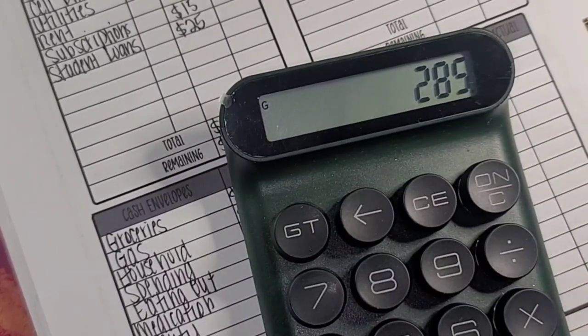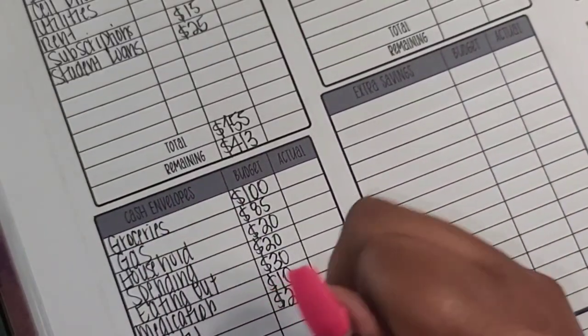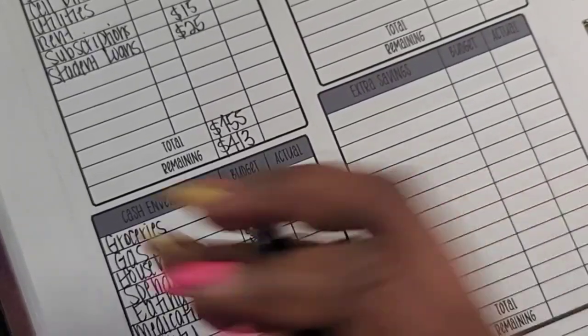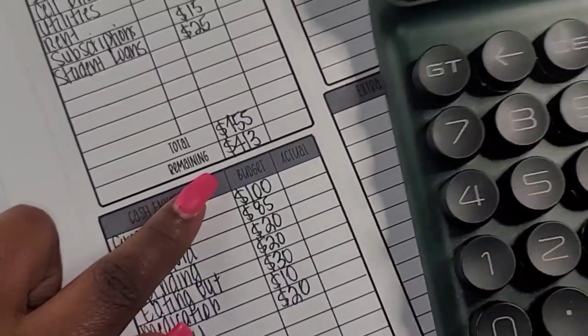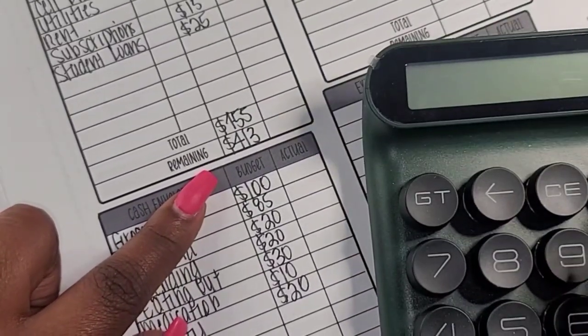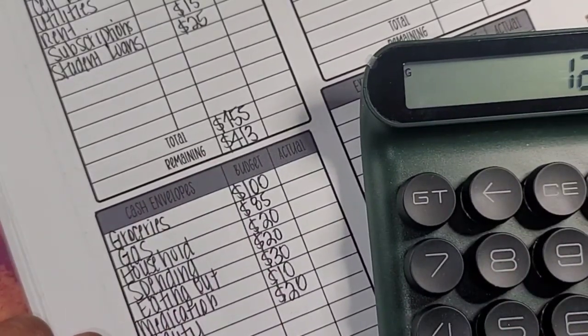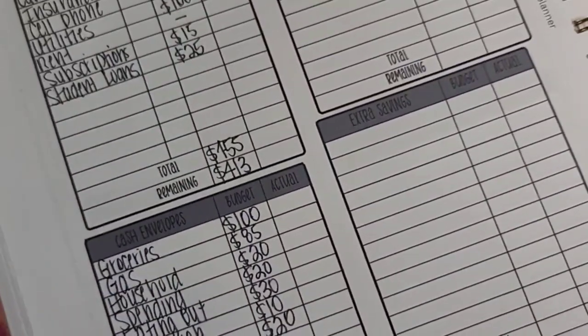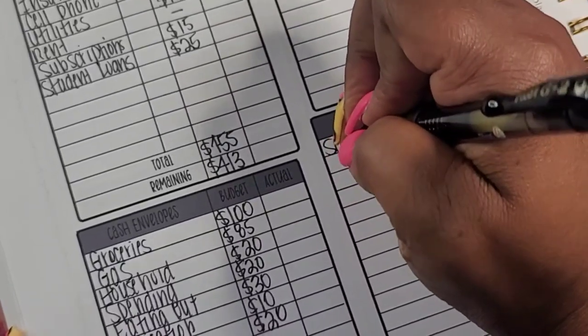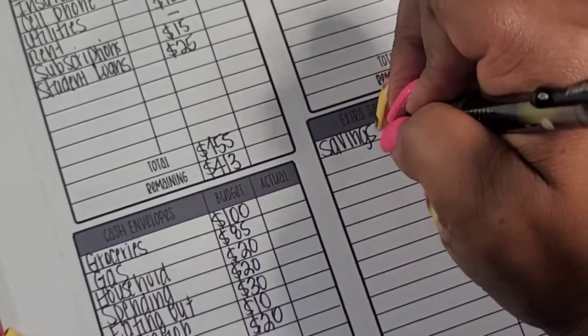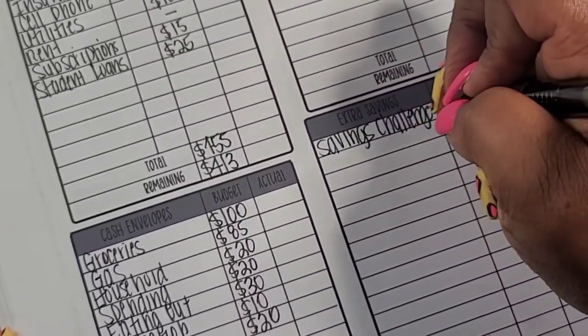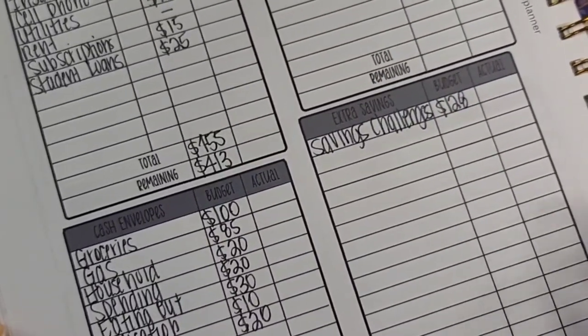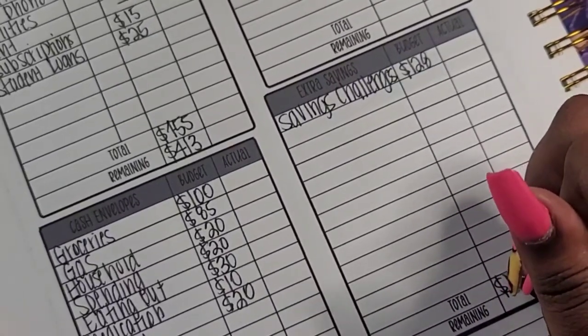So that gives me a total of $285. So now I will take this $413 and subtract it from $285. And that leaves me with a total of $128. And that $128, I'm going to put over here in my savings challenges. And I'm just going to write this $128 here. And the total for this box is $128.